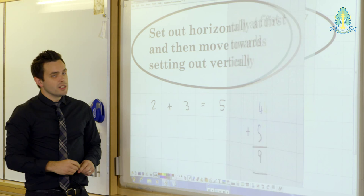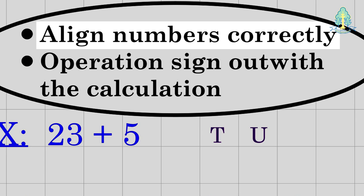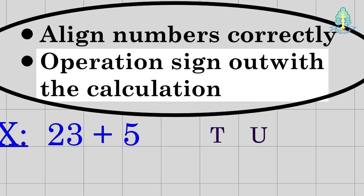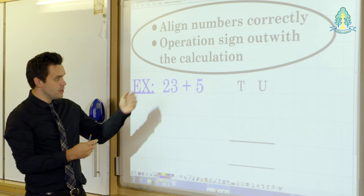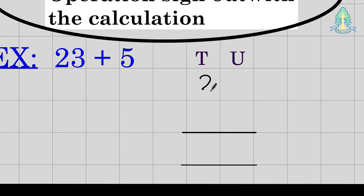Now, when carrying out addition, as with any calculations, we must ensure that the numbers are aligned correctly. We must also try and ensure that the operation sign is out with the calculation. If we set up 23 plus five, two tens three units plus five, like so,